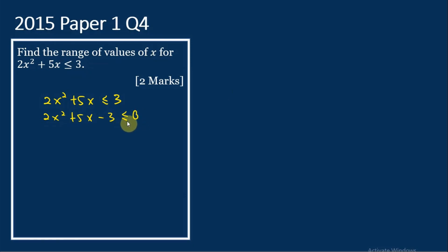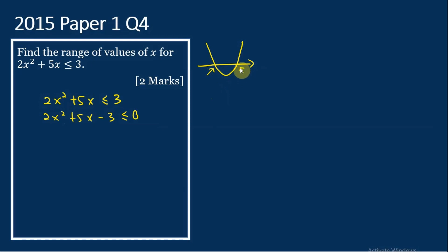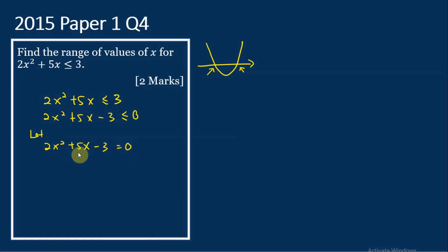To solve this quadratic inequality, we need to use a graph. Let's sketch the graph of this quadratic function. The coefficient of x squared is 2, therefore the graph is a U-shaped graph. To find the solution for this inequality, we need to know the x-intercept of this graph. To find the x-intercept, we let the quadratic expression equal to 0, because at the x-intercept, y is equal to 0. So we let 2x squared plus 5x minus 3 equal to 0. We factorize: this equals 2x minus 1 times x plus 3 equal to 0.